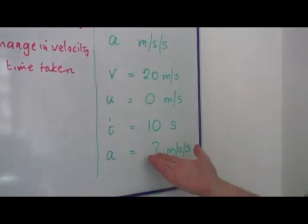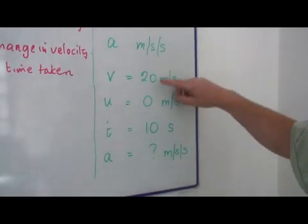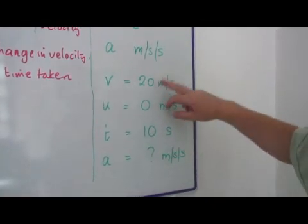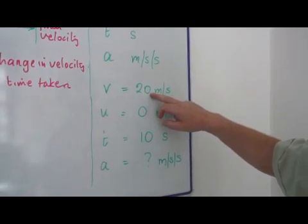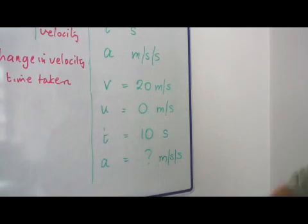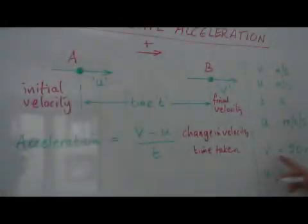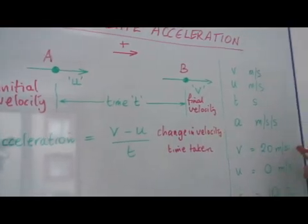To calculate the acceleration, we don't know it now, and we've got time of ten seconds and final velocity of twenty meters per second, initial velocity will be zero meters per second. v is twenty meters per second, in this case.